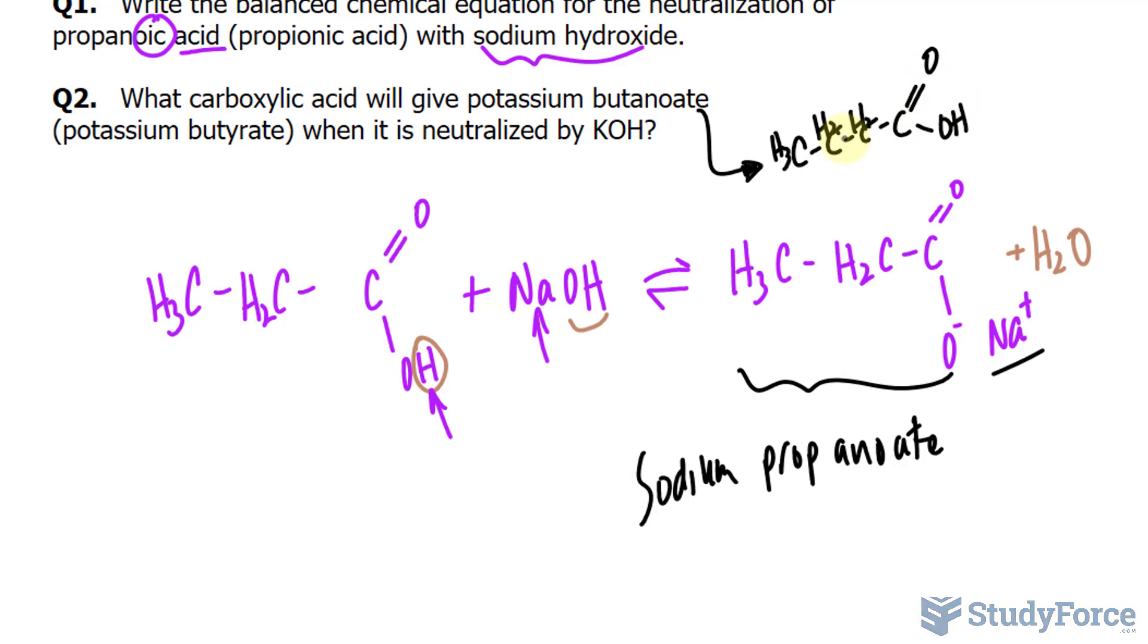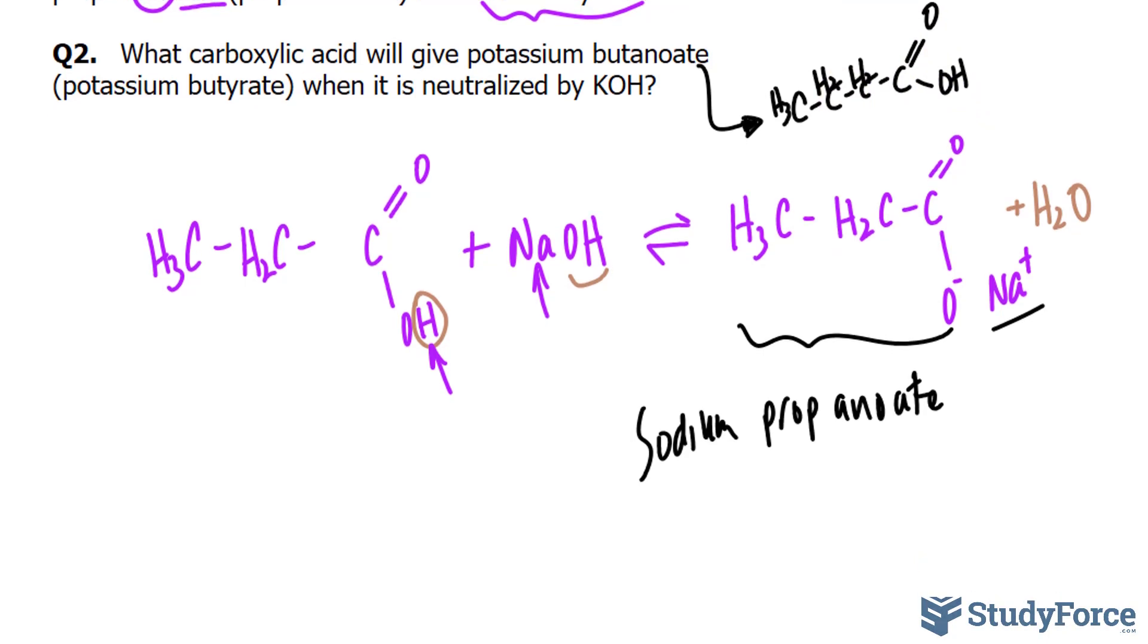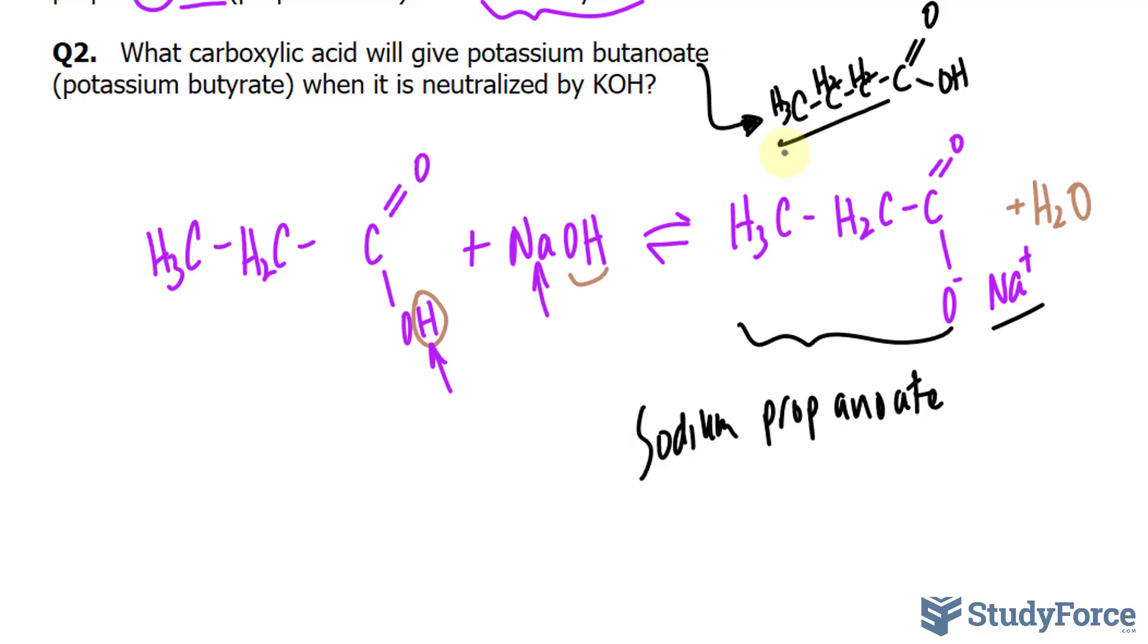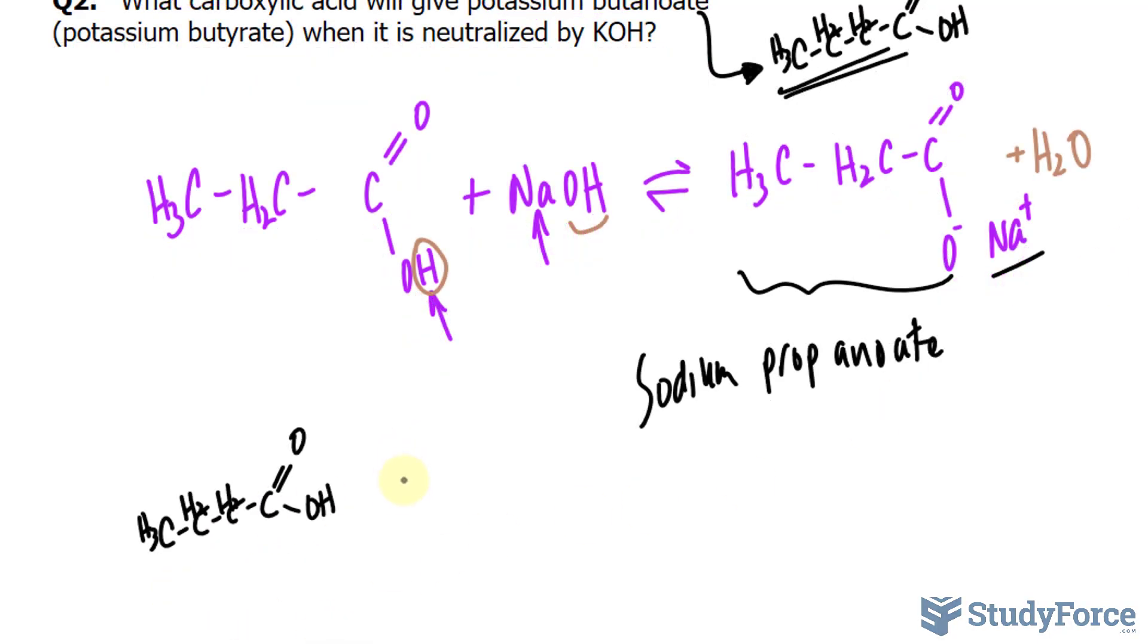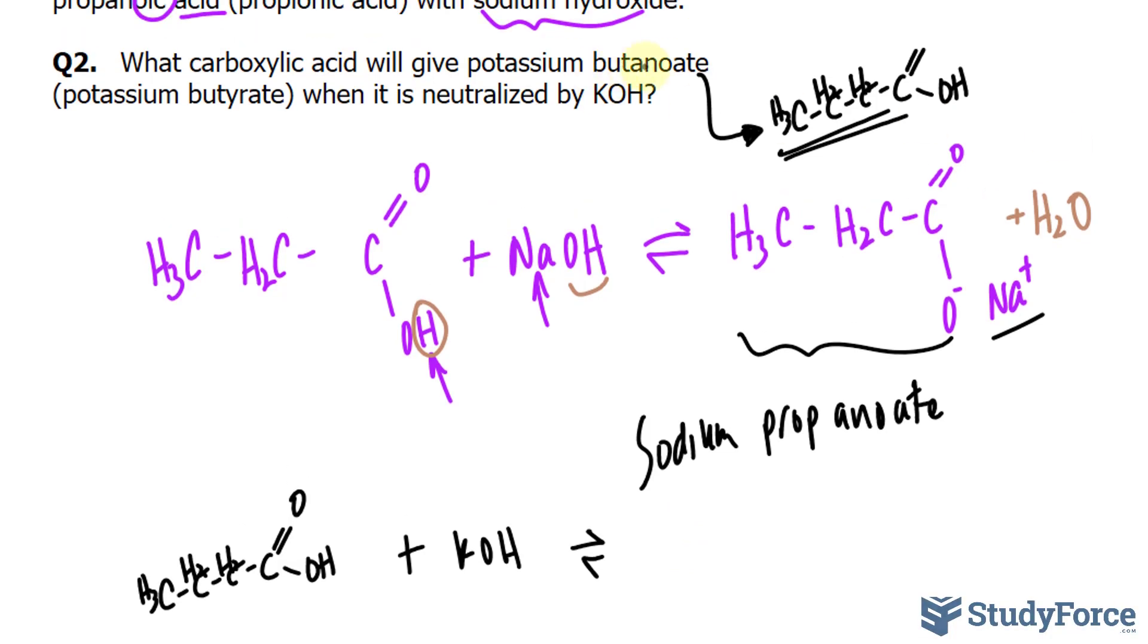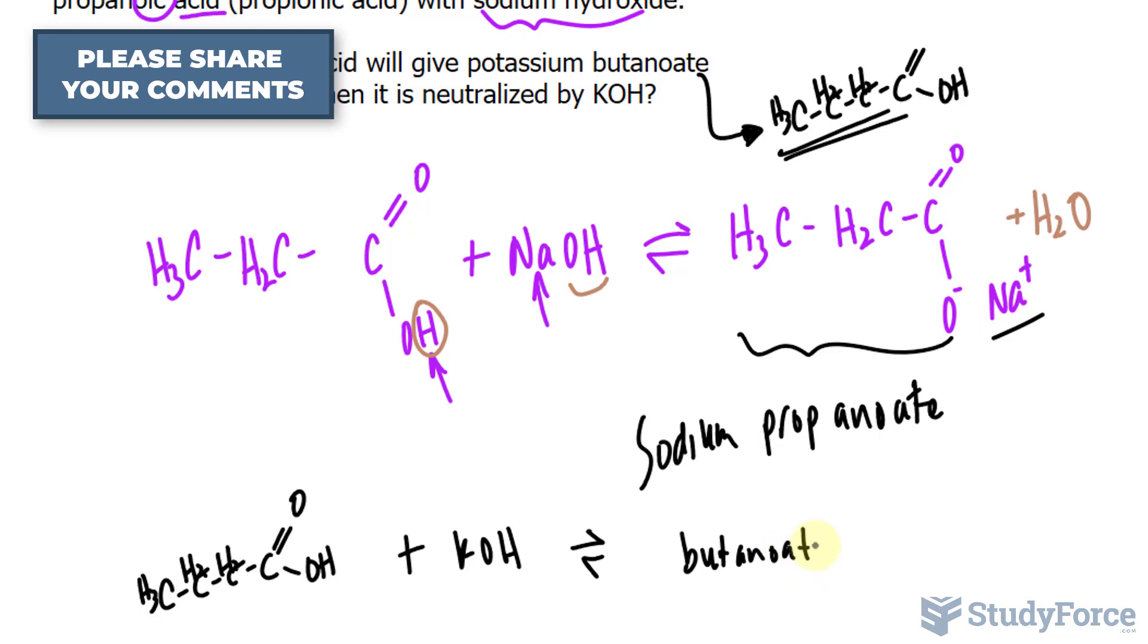So if we have potassium butanoate, they're actually giving us the product here. This means that this is one of our reactants. Let me just move that over here, plus potassium hydroxide. That's our base. And this would form potassium butyrate, or butanoate. Butanoate plus H2O.